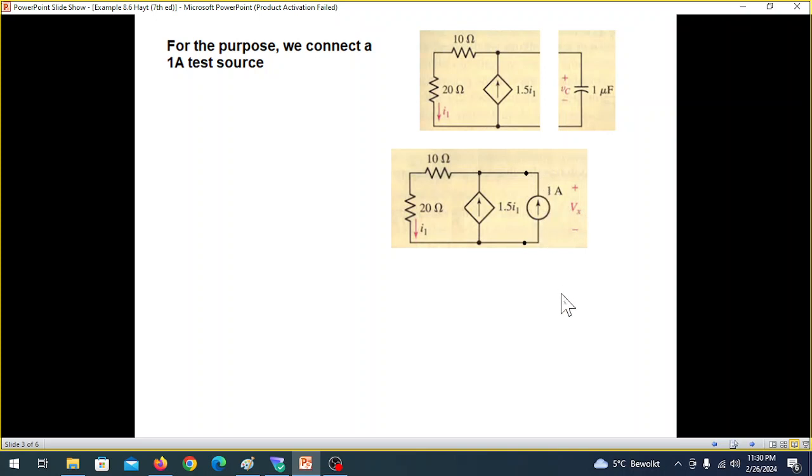the current to find R equivalent. So R equivalent is Vx divided by I and I is 1 ampere. So Vx divided by 1 will give us R equivalent. So the aim here is to find Vx.